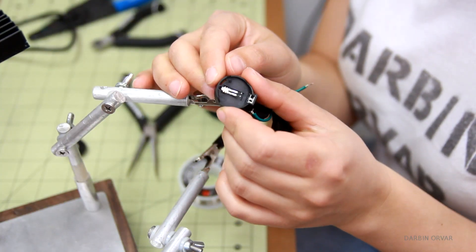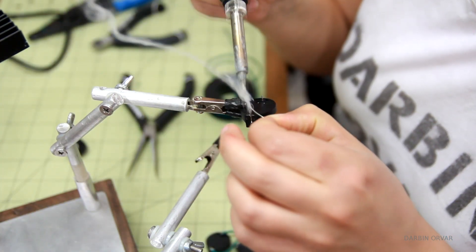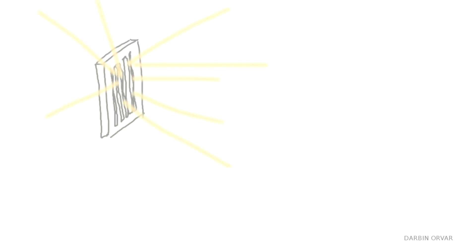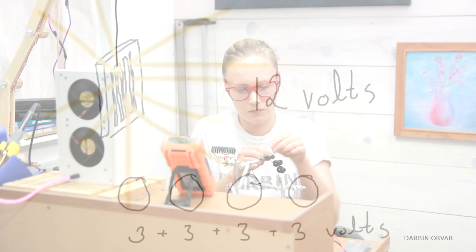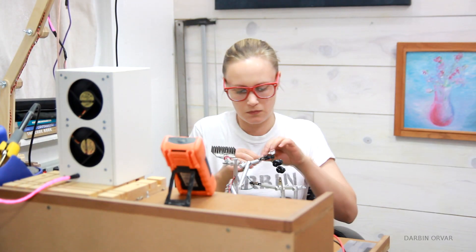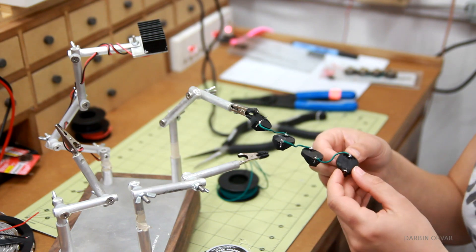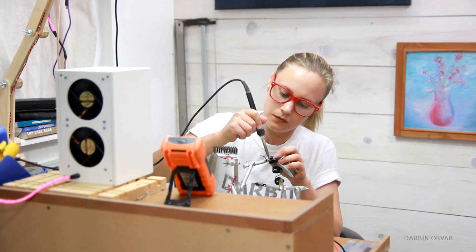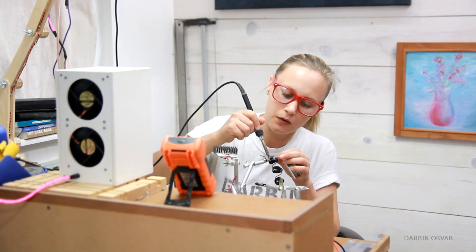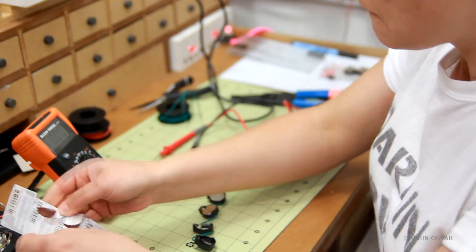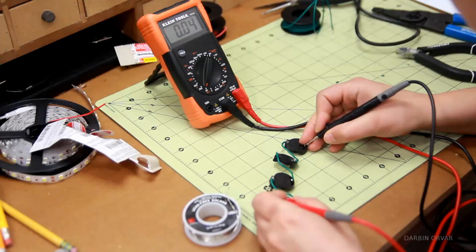So first of all, I have these holders for coin cell batteries, which I got online. So all in all, I need 12 volts because I'm using LED strips. And these coin cell batteries each provide 3 volts. So I'm wiring four holders together in series. So doing a little soldering to connect it all. And then of course, testing it out with batteries to make sure everything is good.